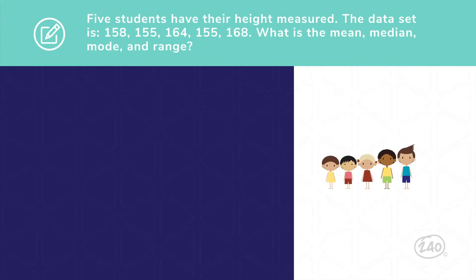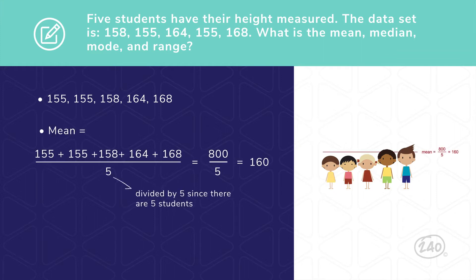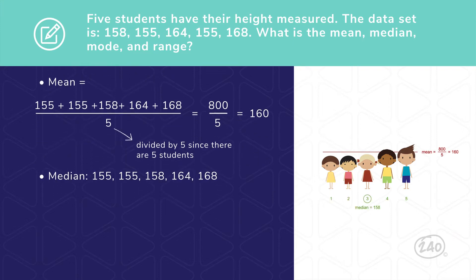Five students have their height measured. The data set is 158, 155, 164, 155, 168. What is the mean, median, mode, and range? First, rearrange the data from least to greatest. The mean is the average, so all those numbers added up, divided by the number of data points, or five, gives us 160. The median is the middle value, so 158. The mode is the number that appears most often. Since the value 155 appears twice, that's our mode. Finally, the range is the largest value minus the smallest value, so 168 minus 155. Our range is 13. Nice!